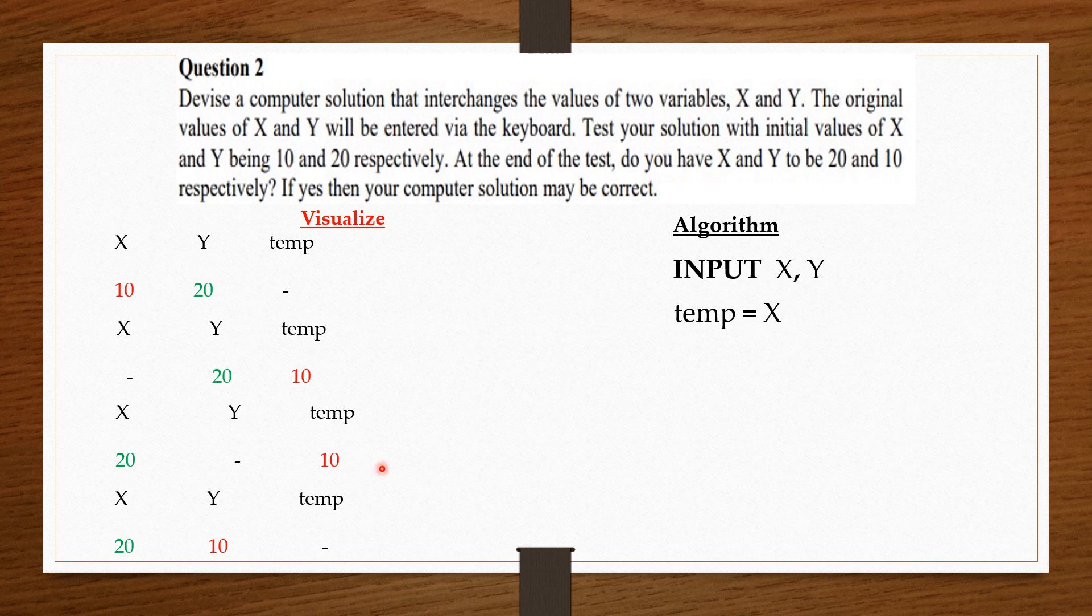Then next, we assign X the value of Y. So we say X equals Y. Then next, we assign Y the value of temp. So we say Y equals temp. Now we would like to display the current values of X and Y. So we say print X and print Y.